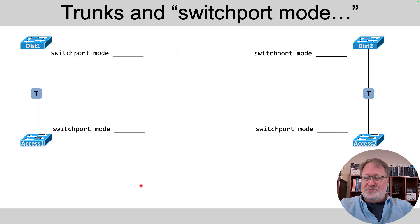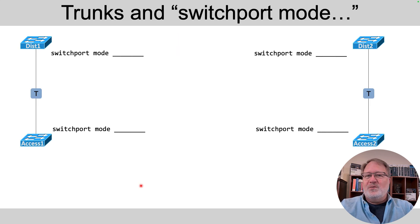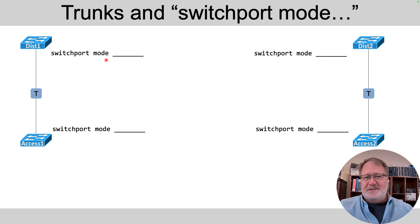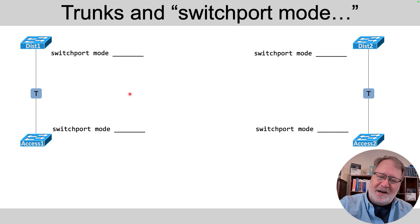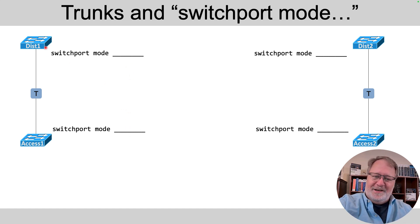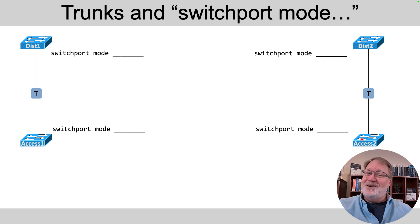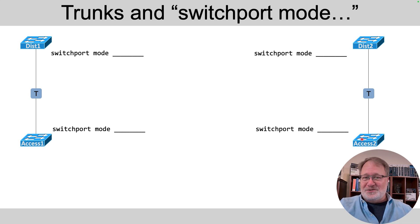There are a lot of ways to configure VLAN trunks between switches using the switchport mode interface subcommand, and there are lots of options. The lab instructions tell you to use as many different combinations as possible on either end of the two switches. If you use a particular combination between dist1 and access1, use a different combination between dist2 and access2, and so on. There are enough different combinations to use a different one on all five of those trunks.